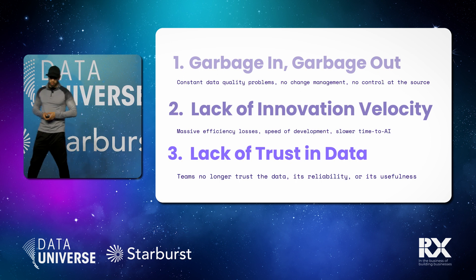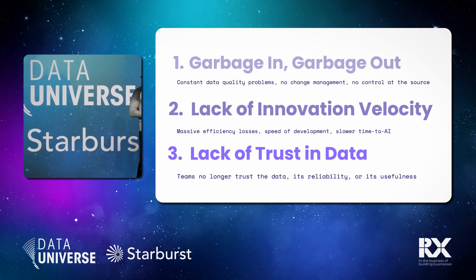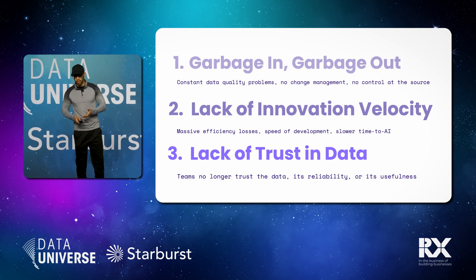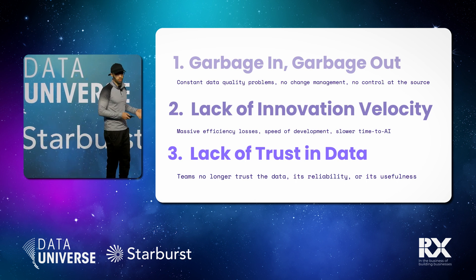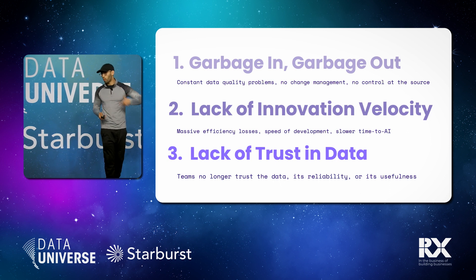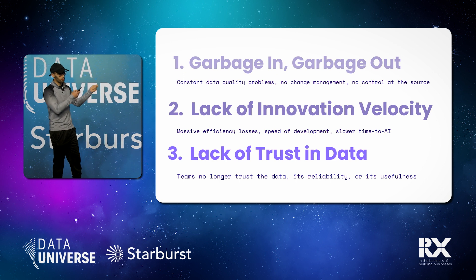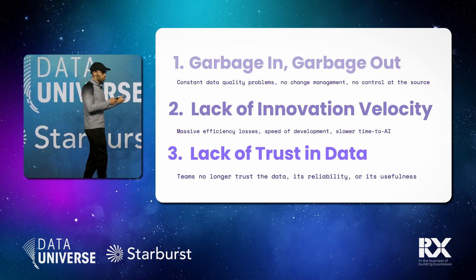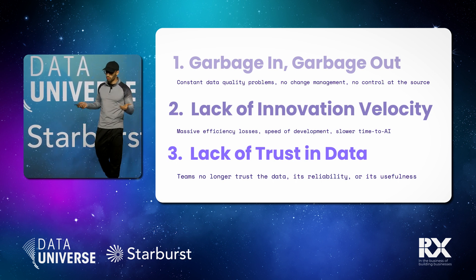Some of the problems that come from that: number one, you start to get a huge garbage-in, garbage-out problem. The data is low quality coming in from the source systems, and that makes it very difficult to use. And because it's hard to use and hard to trust, it leads to a lack of innovation velocity — it starts taking way more time to validate that the data is correct, and you're spending the majority of your time on validation, not on building. And ultimately, that produces a lack of trust in the data. If your team doesn't trust the data, then they use it less often.